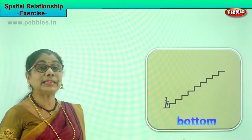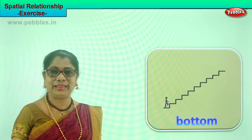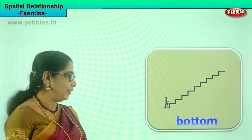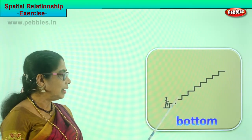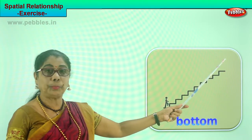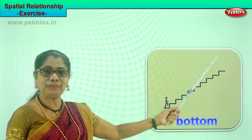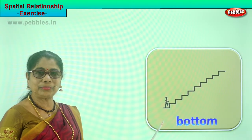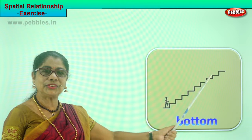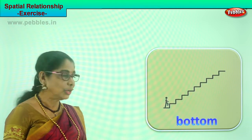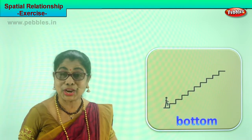Now where is she? He is at the bottom of the stairway, or below the stairway. He is at the bottom. Soon he will climb and reach the top. Then we say top and bottom. When will he reach the top? When he climbs each of these steps. So now he is at the bottom — soon he will reach the top.